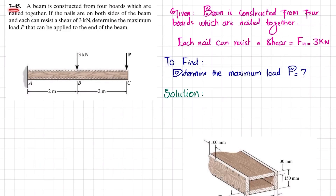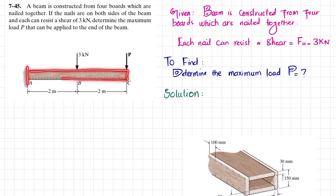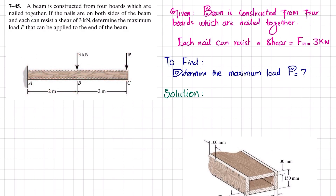Welcome back. Problem 7-45. The statement is: a beam is constructed from four boards which are nailed together. If the nails are on both sides of the beam and each can resist a shear of 3 kilonewton, determine the maximum load P that can be applied at the end of the beam. This is a cantilever beam having a load P at end C and a 3 kilonewton load at a distance of 2 meters. The cross section is made of four boards forming a box beam.